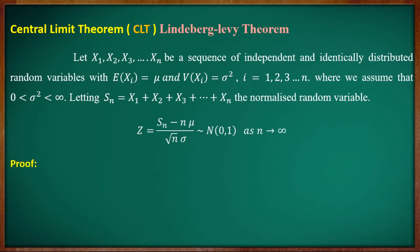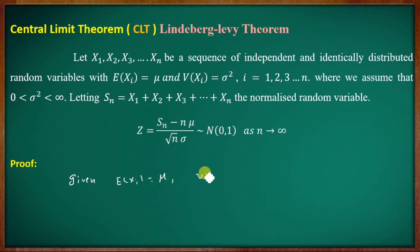Let x1, x2, ..., xn be a sequence of independent and identically distributed random variables, where E[xi] = μ and Var[xi] = σ², for i = 1, 2, 3, etc. We assume that 0 < σ² < ∞.